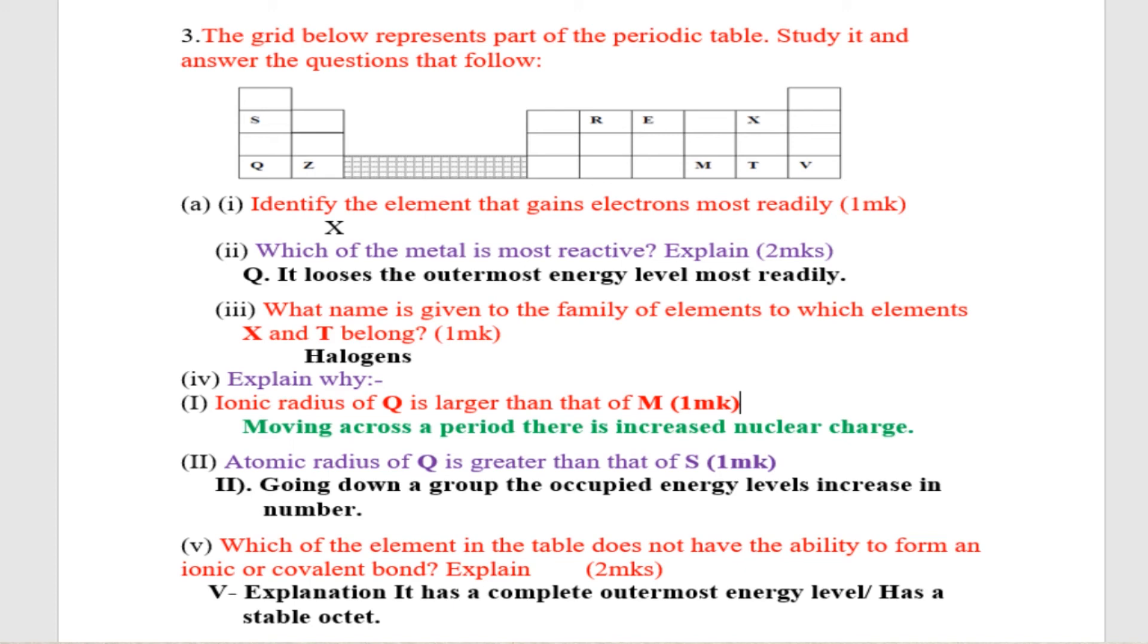(iv) Ionic radius of Q is larger than that of M. Explain. Moving across the periods, there is increased nuclear charge.